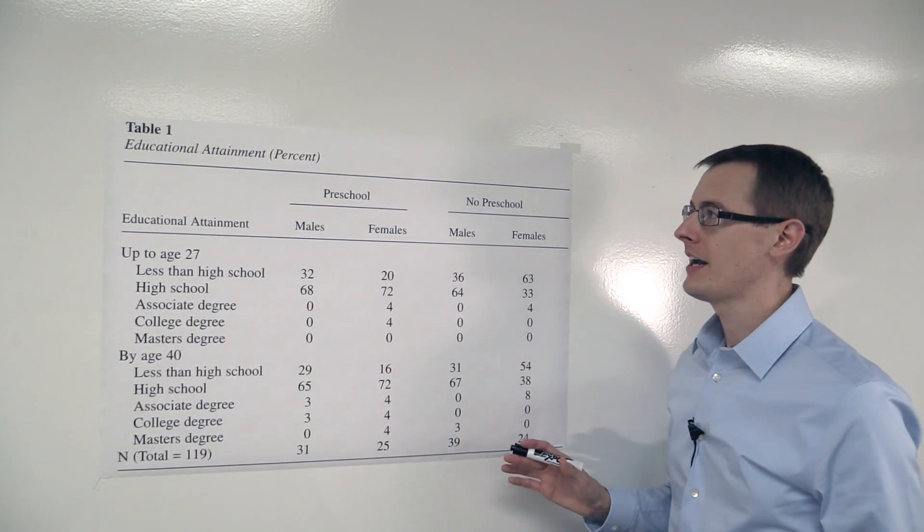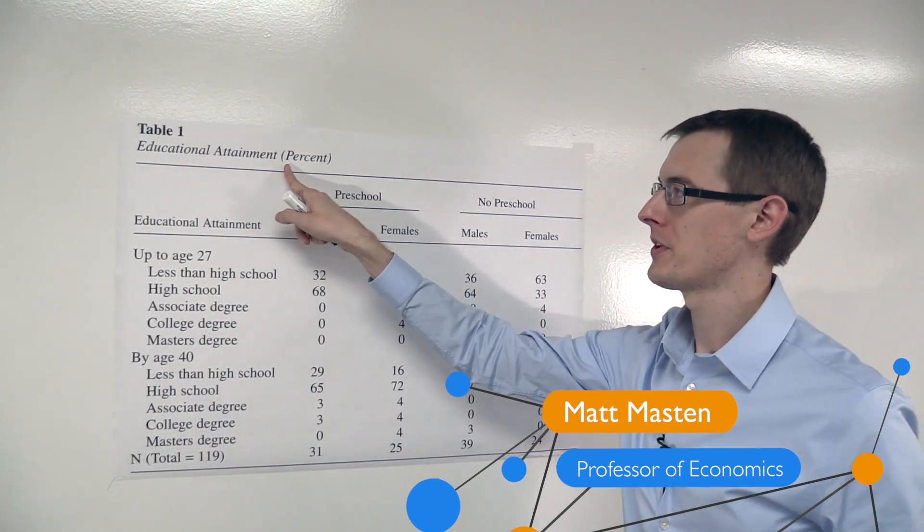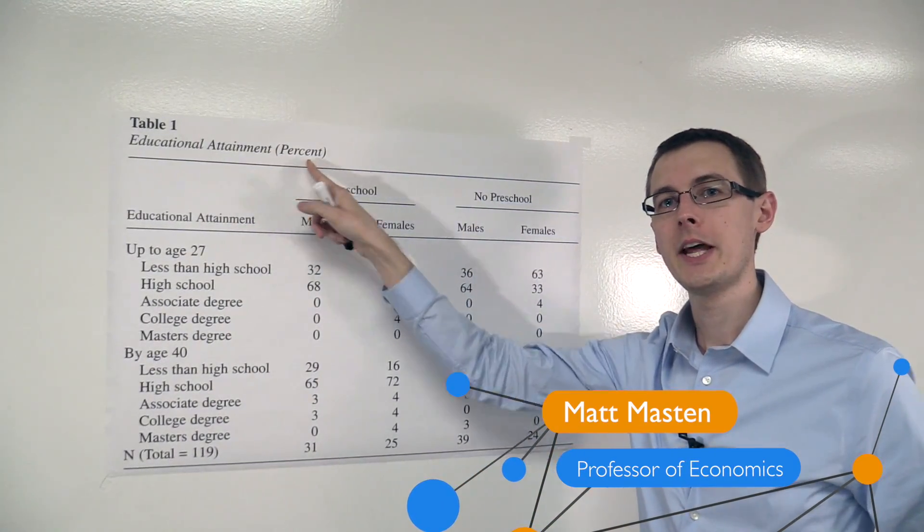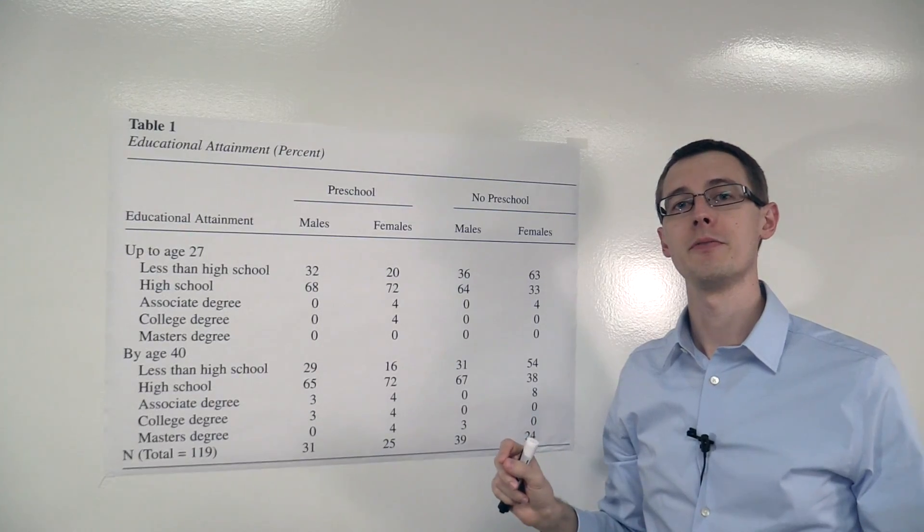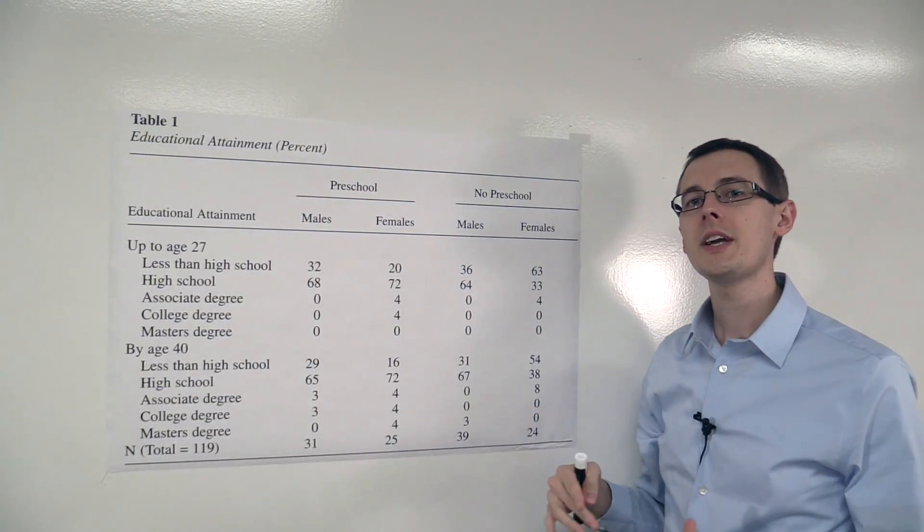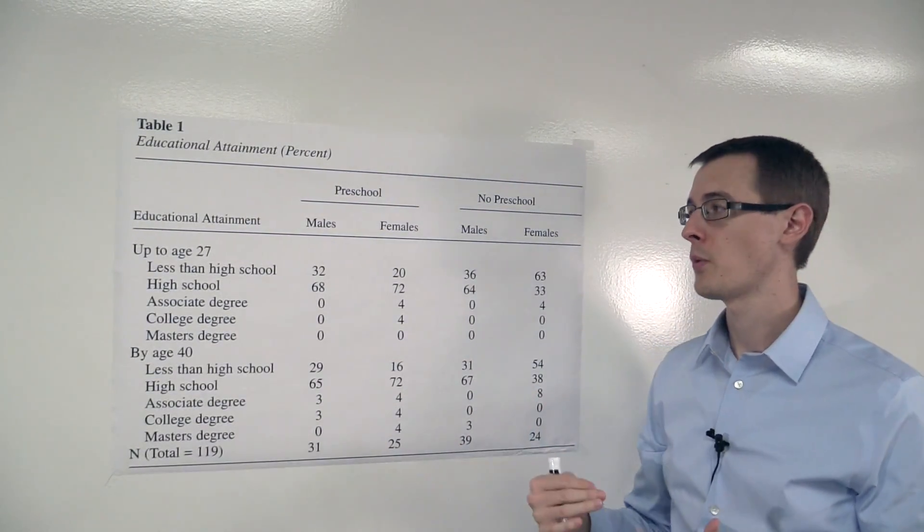Here we've got data on educational attainment for the students in Perry Preschool. Now remember the conditional average treatment effect. Here the researchers think that the treatment effect might be different for men versus women.